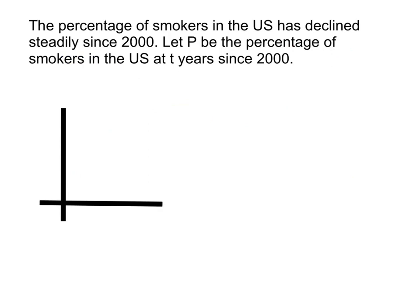Let's look at a new example. The percentage of smokers in the U.S. has declined steadily since 2000. Let P be the percentage of smokers in the U.S. at t years since 2000. Now in this case, the two variables are P and t. And P would be the dependent variable, because the percentage of smokers depends on how many years after 2000 it is. So just like before, we'll label the independent variable on the horizontal axis, and the dependent variable on the vertical axis.